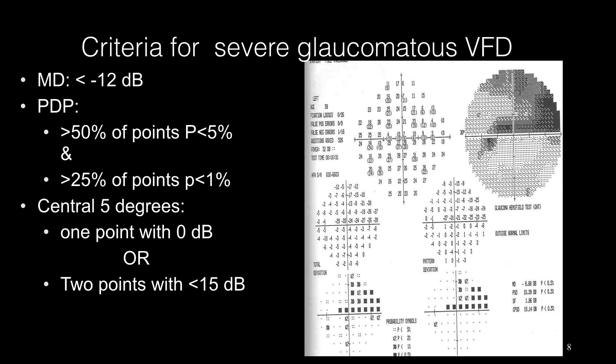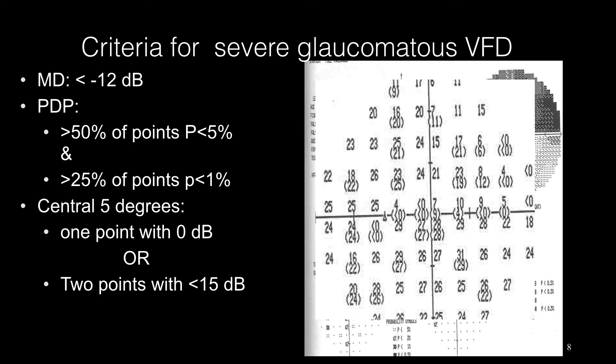In the severe visual field defect stage, the mean deviation is below minus twelve dB. In the pattern deviation plot, more than 50 percent of points have a p-value less than five percent, and more than 25 percent have a p-value less than one percent. In the central five degrees, one point has a zero dB threshold value, or two points have a dB value of 15 or below. This image shows the four central points, with one of the points having a dB value of zero.